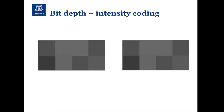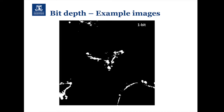What does this mean practically? Here we've got a zoomed-in region of a two-by-four pixel array. On the left, this is saved on an 8-bit scale which goes from 0 to 255 grayscale values. You can see the two highlighted pixels have the exact same intensity values. If we take the exact same data but save it as a 16-bit image, we can now start to differentiate the intensities between those two pixels, and that really becomes important when we start to look quantitatively at the data.